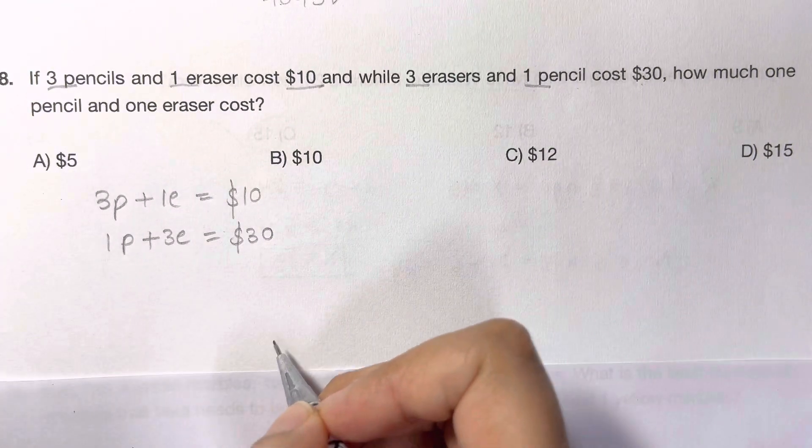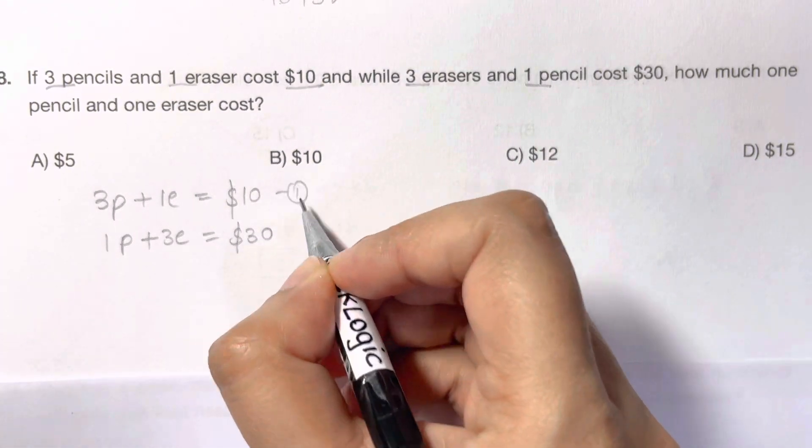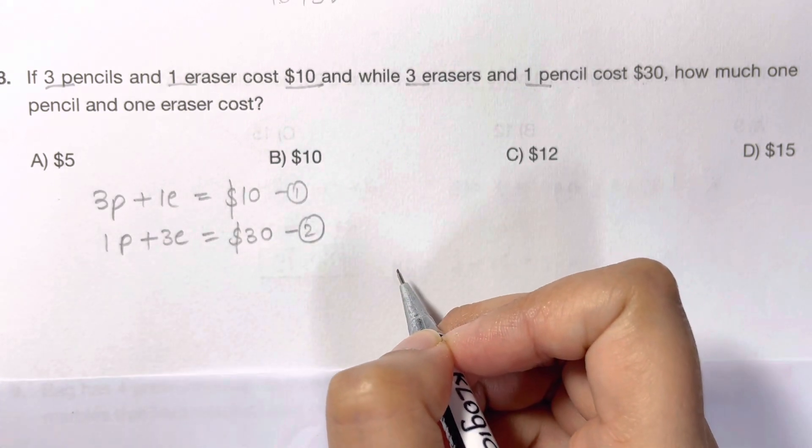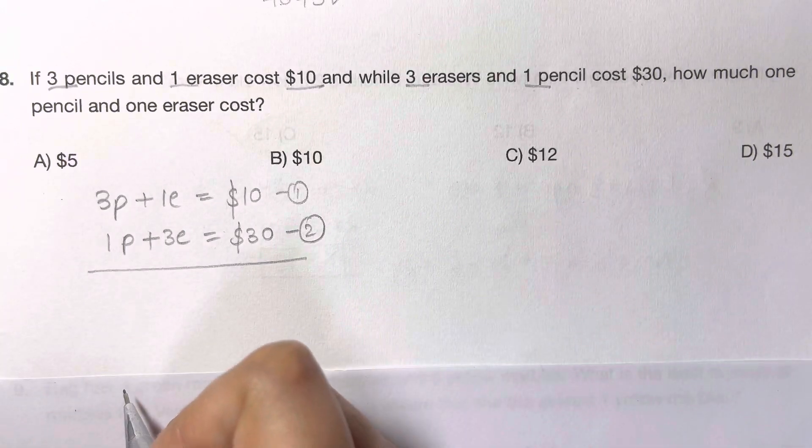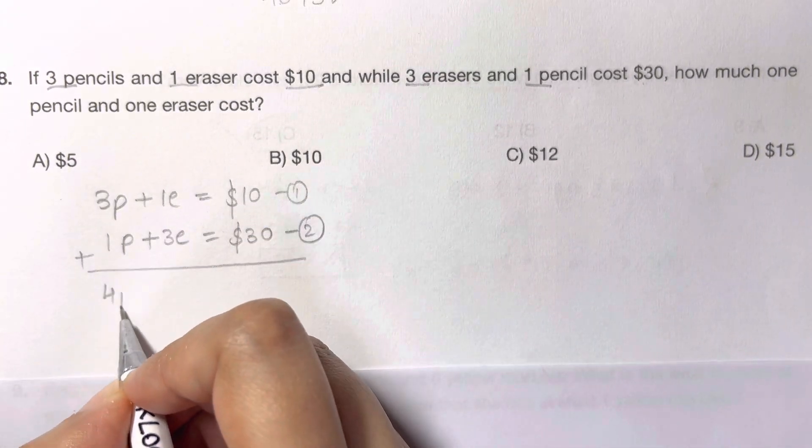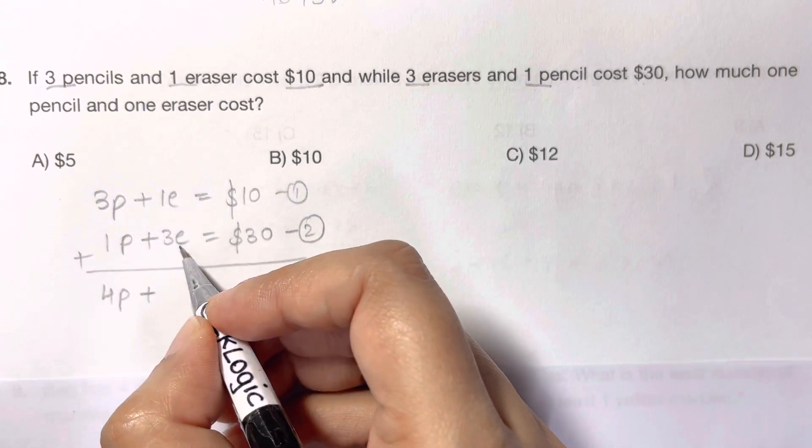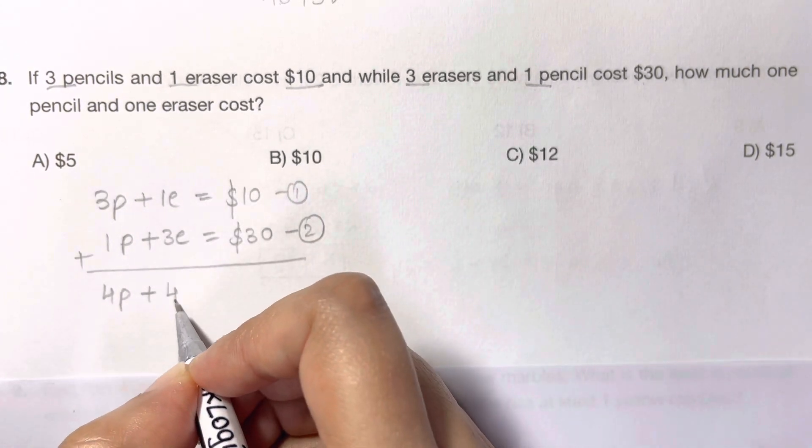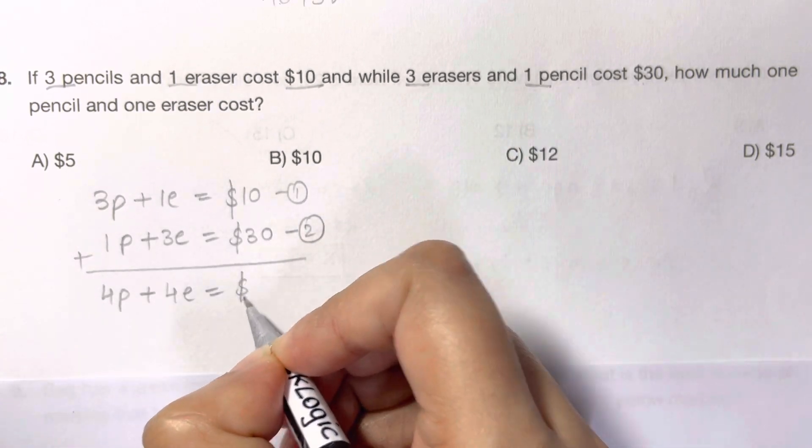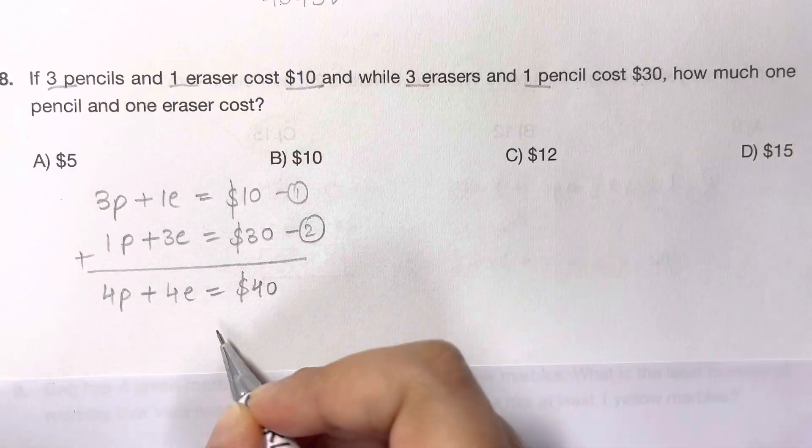Now how should we solve this? We have two equations in terms of two variables, so you can use substitution or elimination method. Let's add them up: three pencils plus one pencil equals four pencils, plus one eraser plus three erasers equals four erasers, equals ten dollars plus thirty dollars, forty dollars.